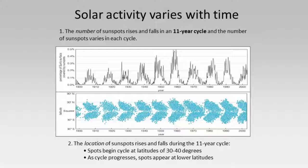A bottom chart illustrates another feature of the cycle known as the butterfly diagram. We're seeing the latitude of sunspots over the years — sometimes sunspots tend to concentrate at mid-latitudes between the Sun's equator and pole, and other times they concentrate more towards the equator. Essentially, at the beginning of the cycle at minimum, sunspots begin to appear at mid-latitudes, about 30 to 40 degrees from the equator.